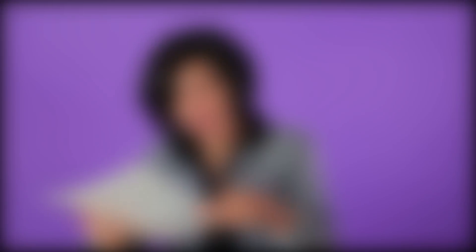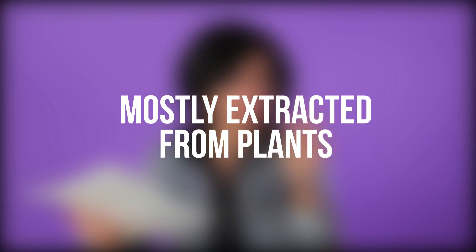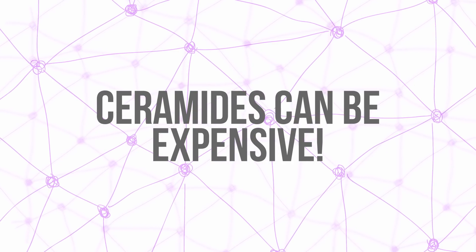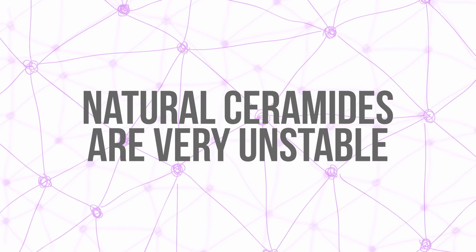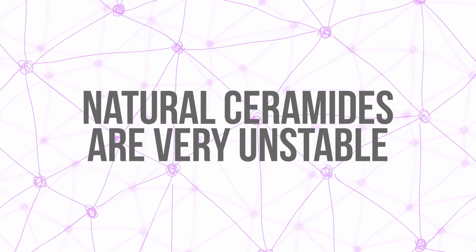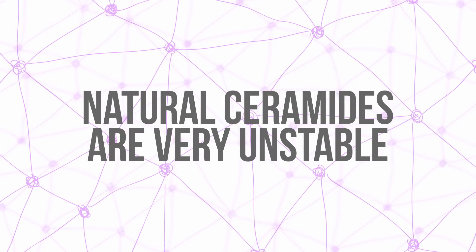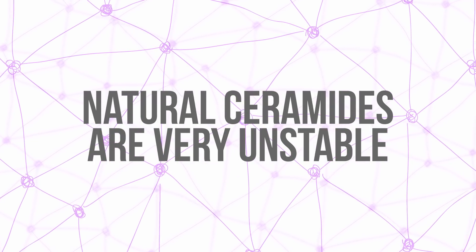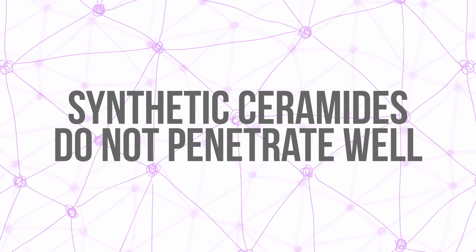Nobody is harvesting human bodies to get these ceramides. Instead, we get them from other natural and synthetic sources. Synthetics obviously come from a lab. For natural sources, they either come from animal sources such as cows, but they are mostly extracted from plant sources like sweet potatoes, wheat, and brown rice. Ceramides are expensive, which is why we see them in high-end skin care. Natural ceramides are very unstable substances, and because they are costly to obtain, synthetic ceramides are frequently used. Unfortunately, synthetic ceramides do not penetrate the skin as well.